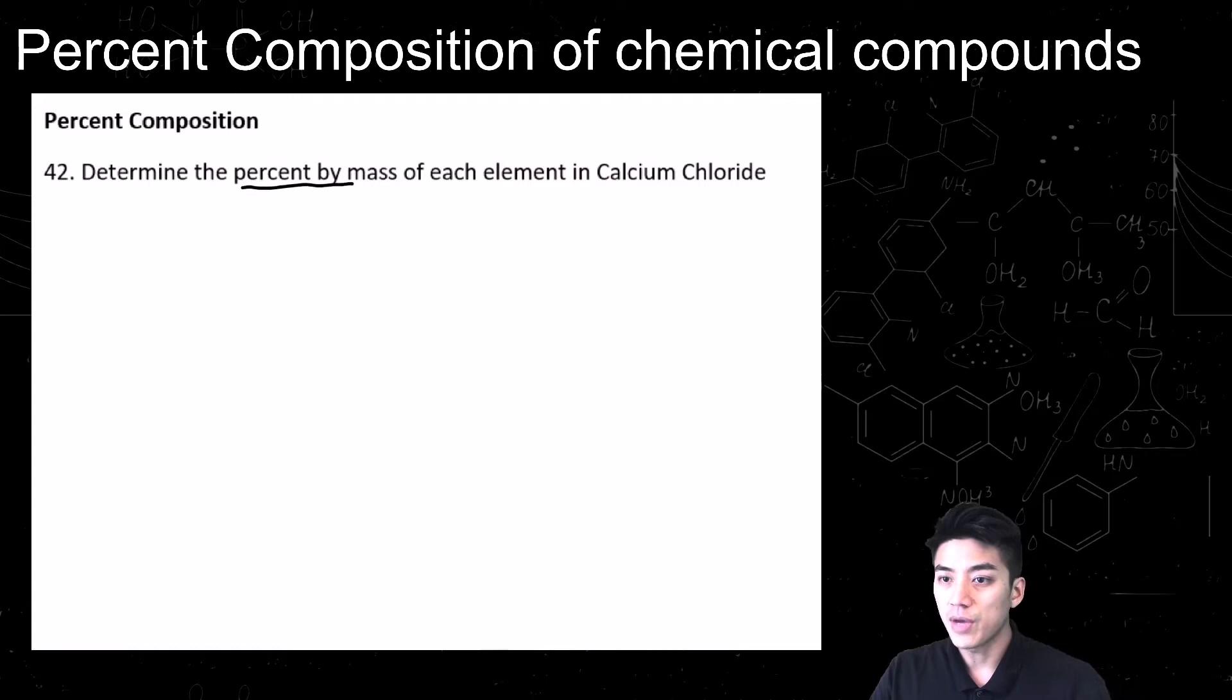Let's see an example here, where you're asked to find the percent by mass of each element in calcium chloride. So it's percent composition. You first need to come up with a formula for calcium chloride. So calcium is plus 2, chlorine is negative 1.